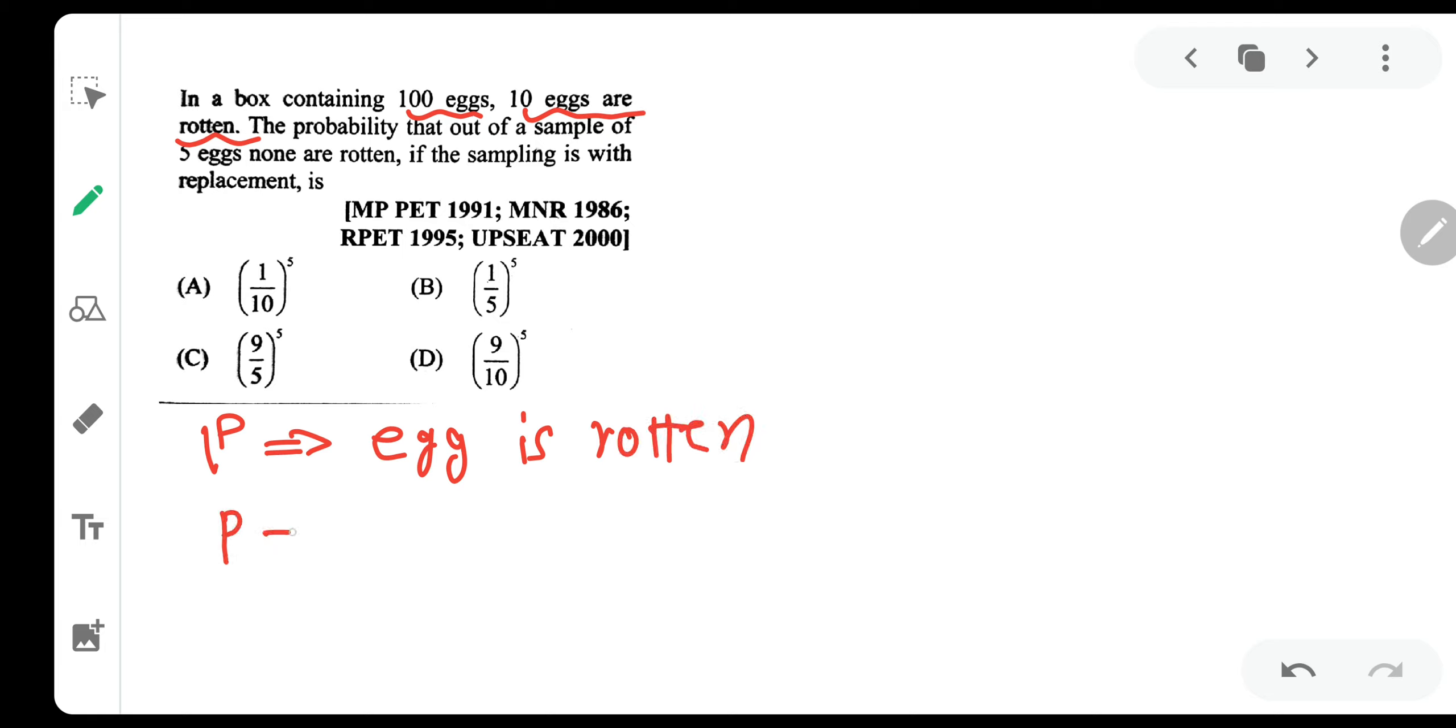Now out of 100 eggs, 10 are rotten. So the probability that the egg is rotten is 1 by 10. Let Q be the probability that the egg is not rotten. What will be the probability? It is very simple. It will be 1 minus 1 by 10 which will be equal to 9 by 10.